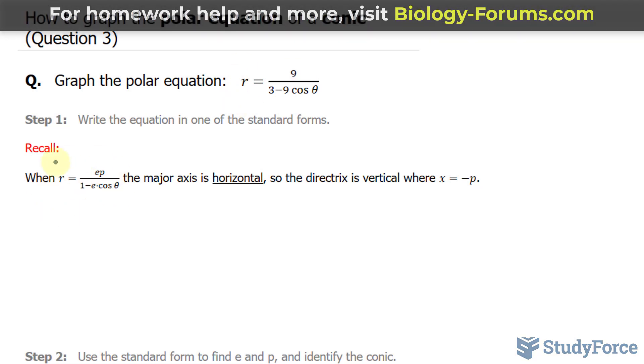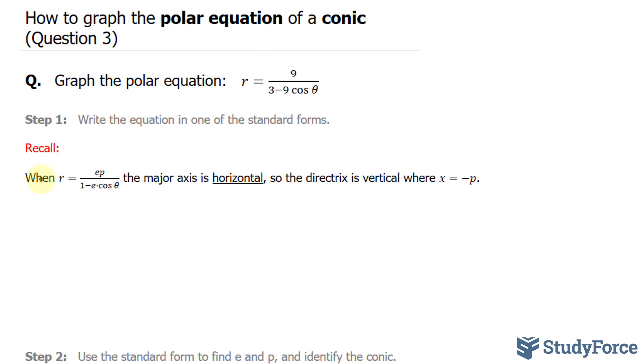So what we want to do is make this look like the standard form. And we can do that by first factoring out a 3 from these two terms. What that will end up giving us is an expression where we have 1 minus a number in front of cosine theta.